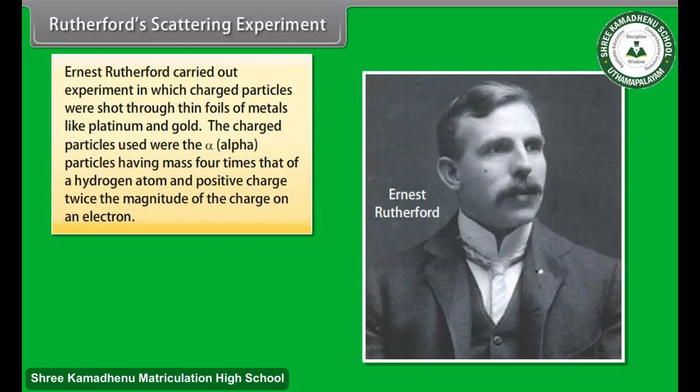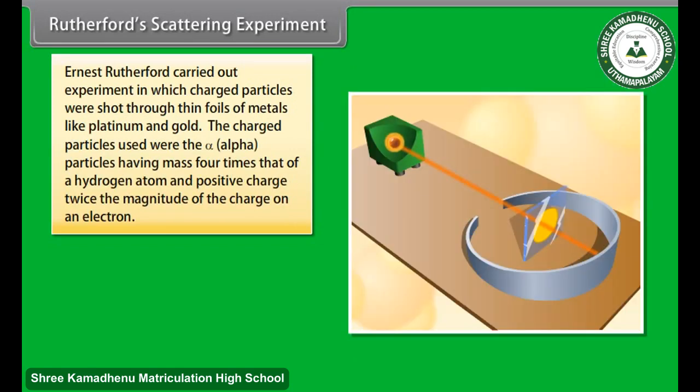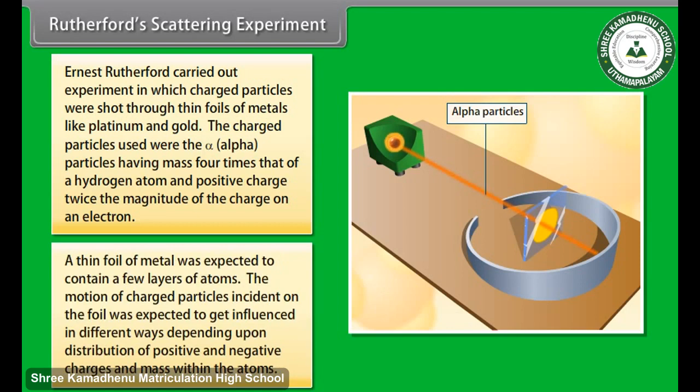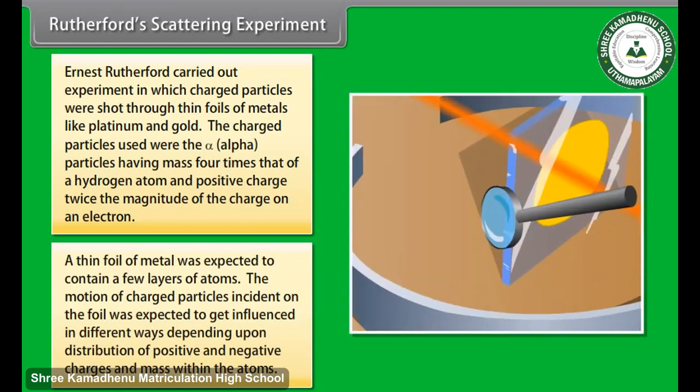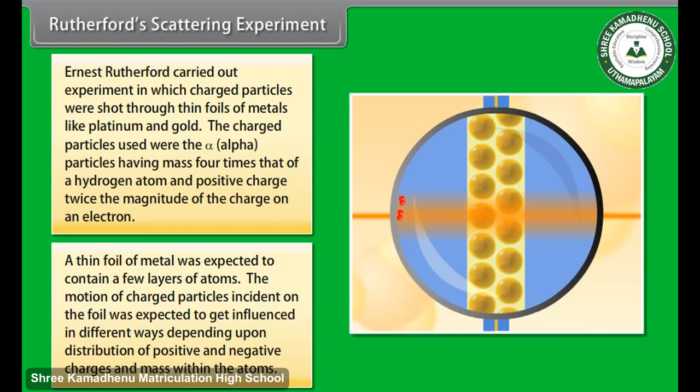Rutherford Scattering Experiment. Ernst Rutherford carried out an experiment in which charged particles were shot through thin foils of metals like platinum and gold. The charged particles used were alpha particles, having mass four times that of a hydrogen atom and positive charge twice the magnitude of the charge of an electron. A thin foil of metal was expected to contain a few layers of atoms.